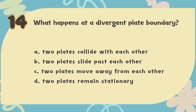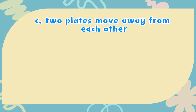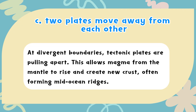The correct answer is C. Two plates move away from each other. At divergent boundaries, tectonic plates are pulling apart. This allows magma from the mantle to rise and create new crust, often forming mid-ocean ridges.